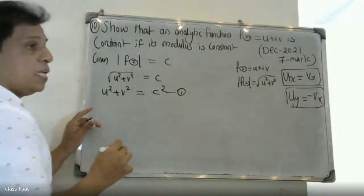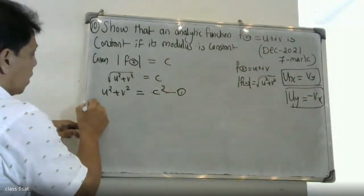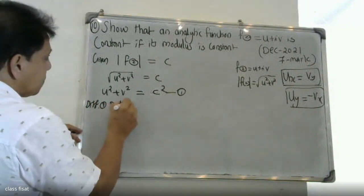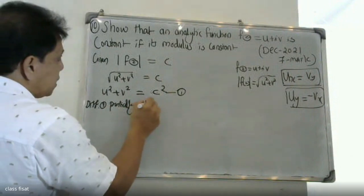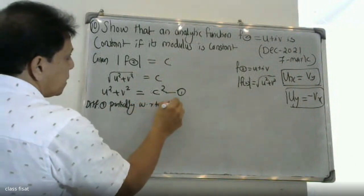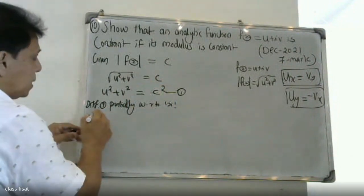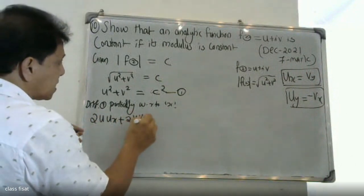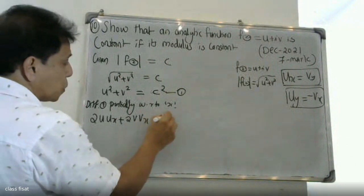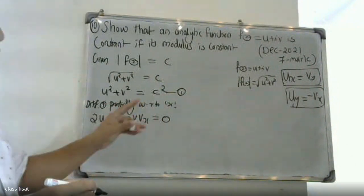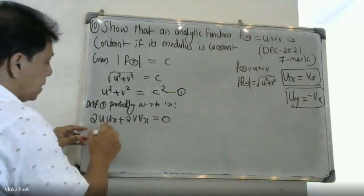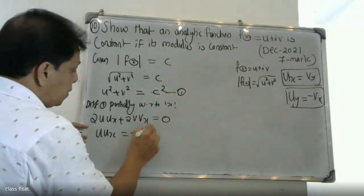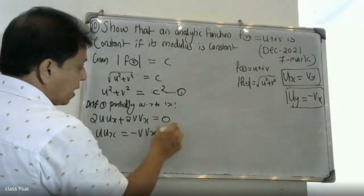Differentiating equation 1 partially with respect to x: 2u·ux + 2v·vx = 0. Therefore, u·ux = -v·vx. This is equation 2.